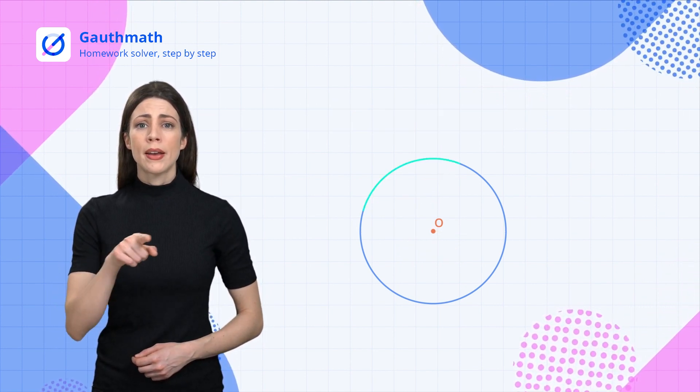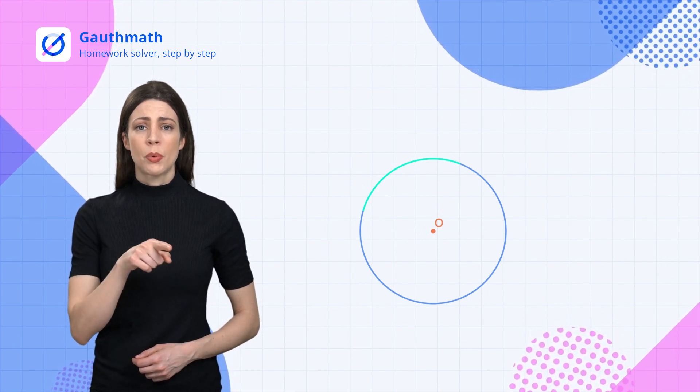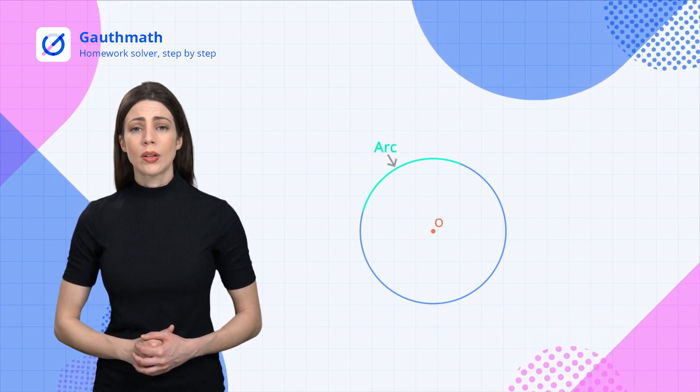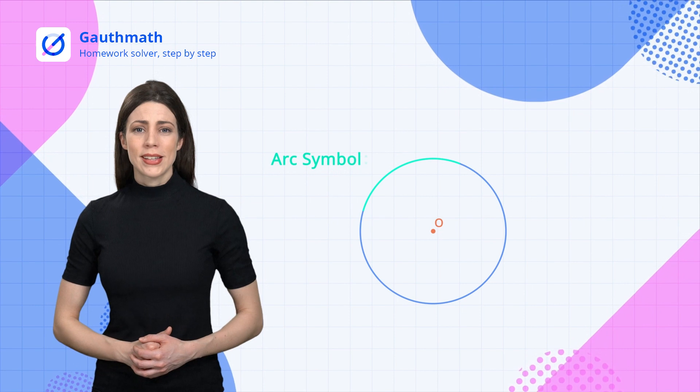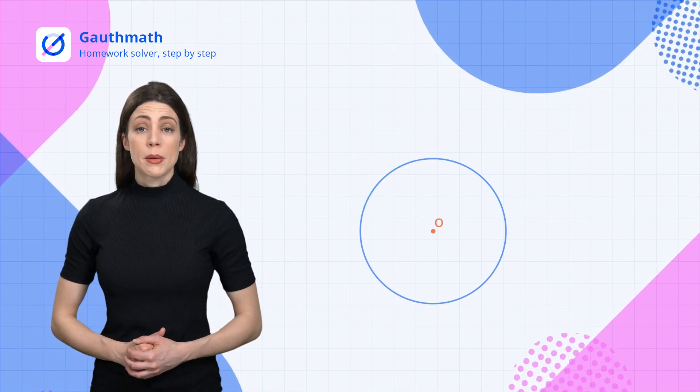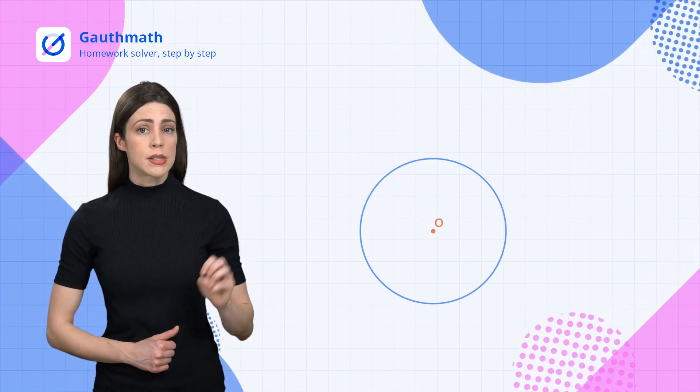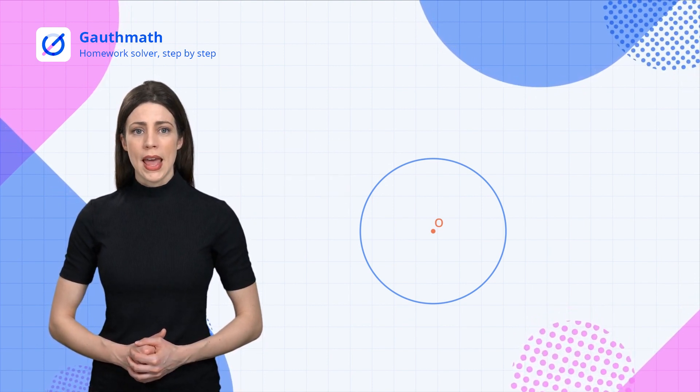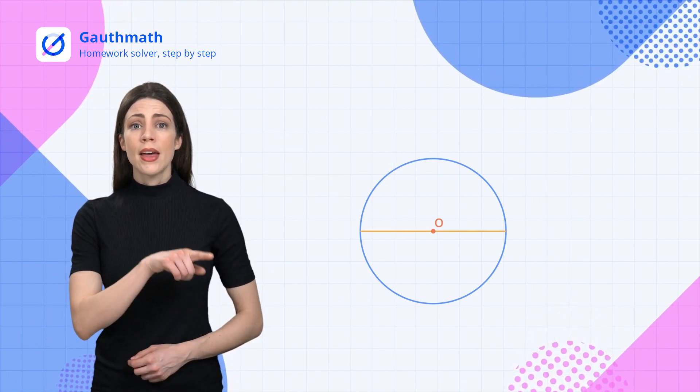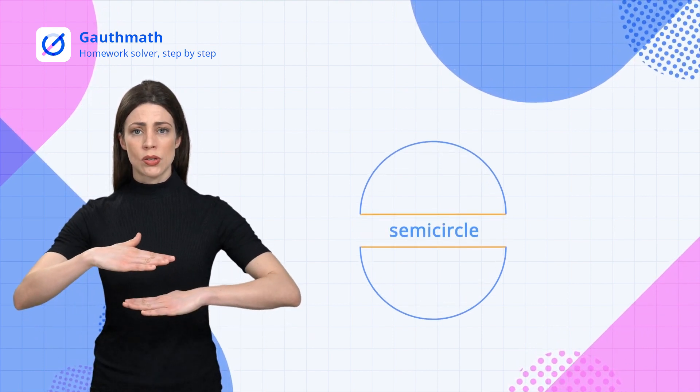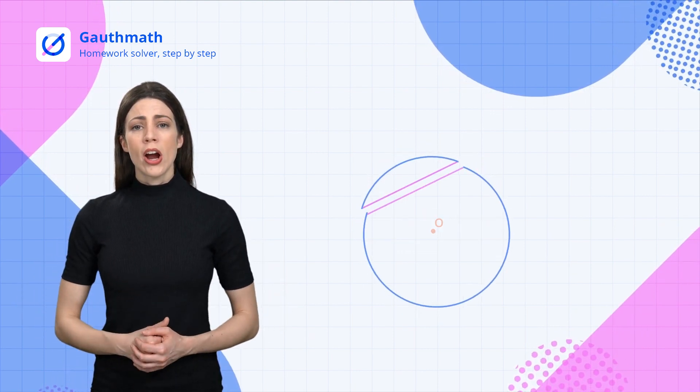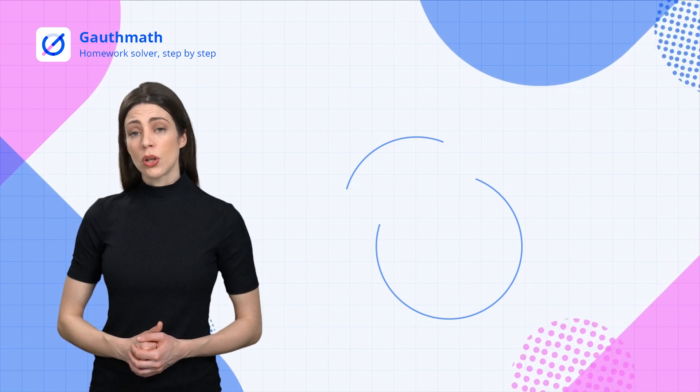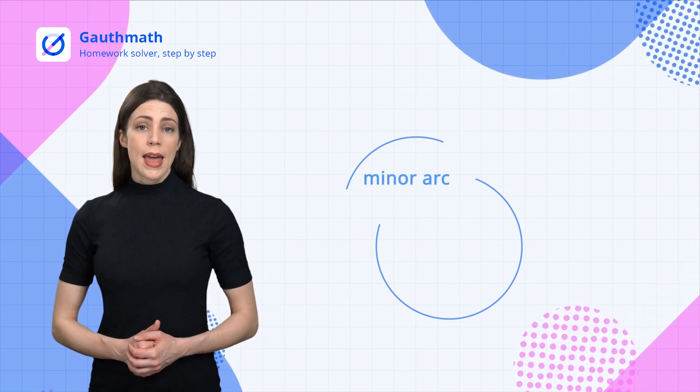Any connected portion of a circle is called an arc. Here is its symbol. Arcs can be divided into three types: minor arc, semi-circle, and major arc. Any diameter can divide the circle into two semi-circles. An arc that is smaller than a semi-circle is called a minor arc.